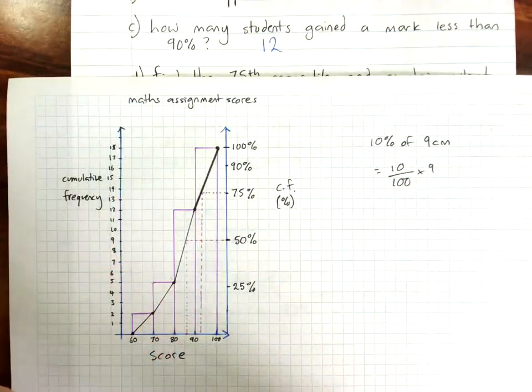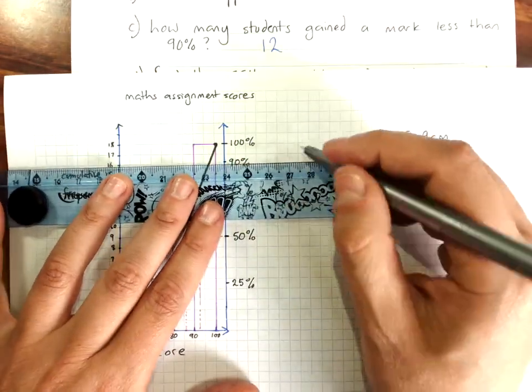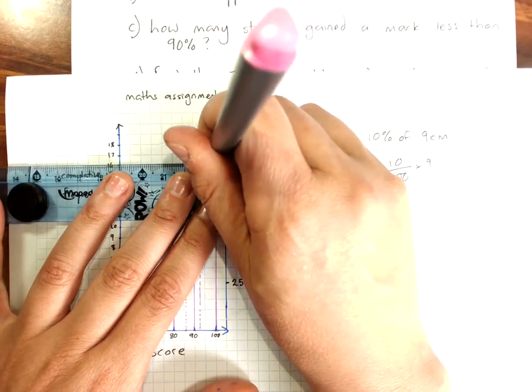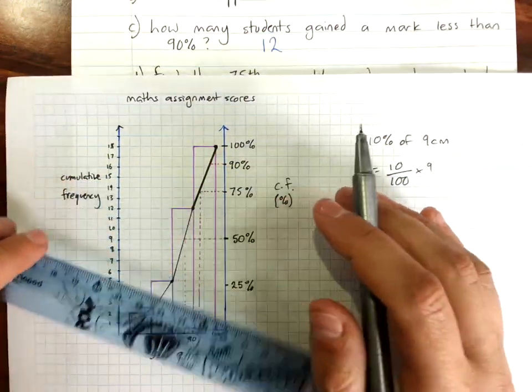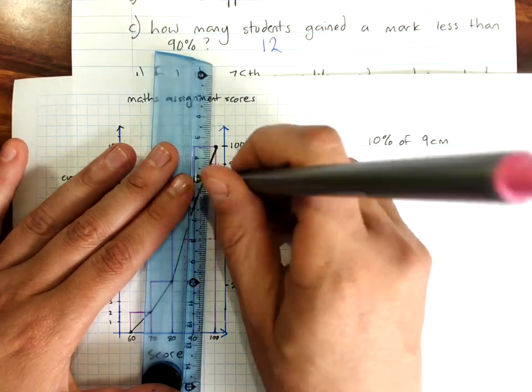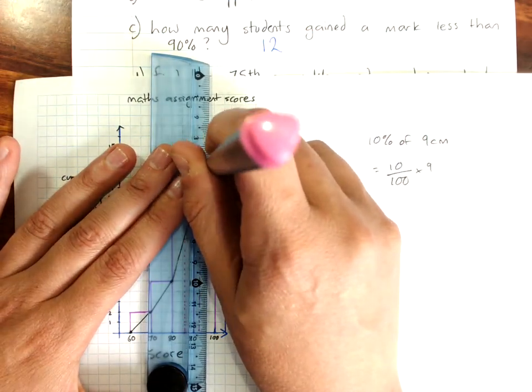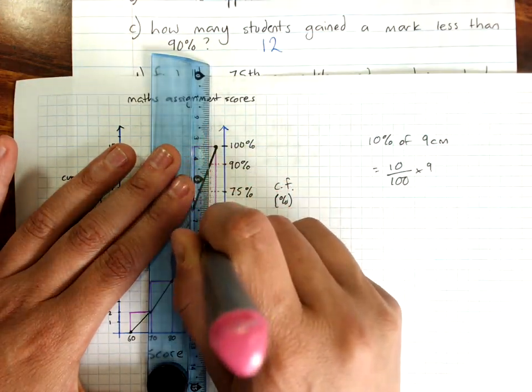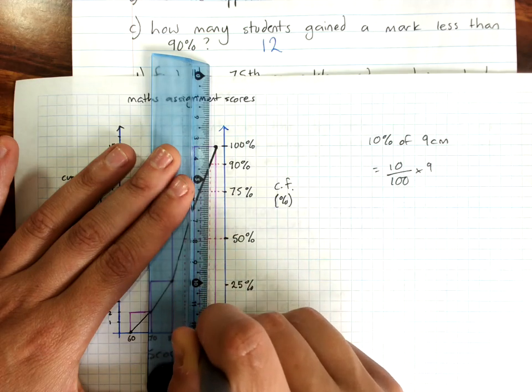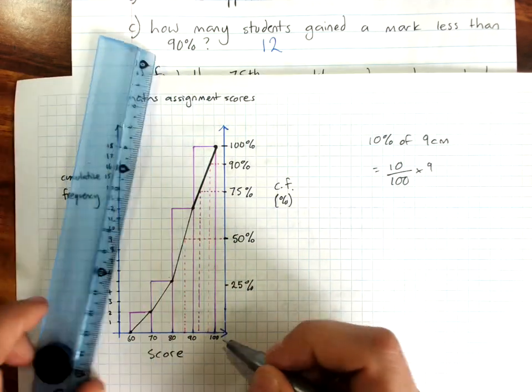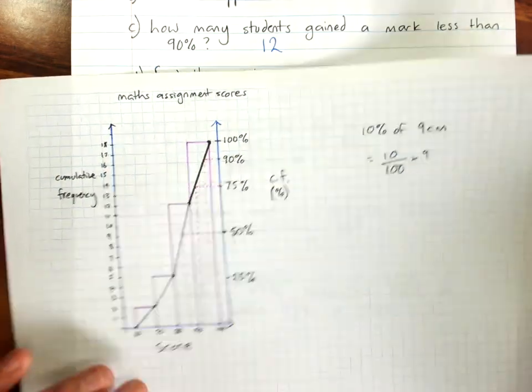So, of course, again going across and down and we look like that's about 97%.